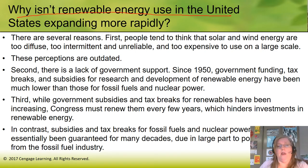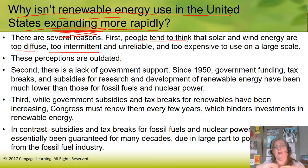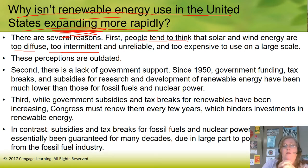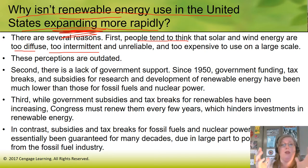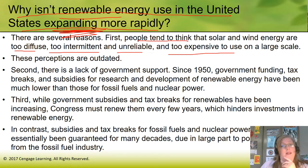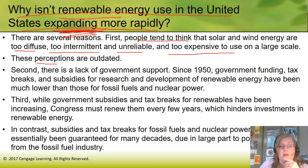So why isn't renewable energy use in the US expanding more rapidly? First, people tend to think that solar and wind are too diffuse — intermittent and unreliable — like the sun only works on sunny days, the wind only works on windy days. But we've found ways around it. You can take solar on sunny days and store batteries, or use a combination of solar and wind together. These perceptions are very outdated — solar and wind are not too intermittent, too unreliable, or too expensive anymore.